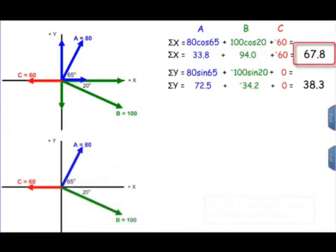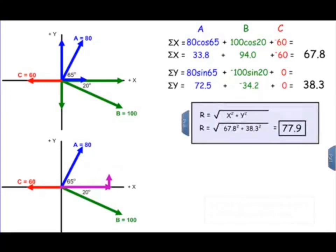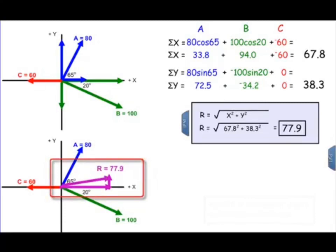The sum of the x components, 67.8, is represented by the vector on the x axis, and the sum of the y components, 38.3, is represented by the purple vector. These are the two legs of a right triangle, so we can define the resultant using the Pythagorean theorem: the square root of the sum of the x's squared plus the sum of the y's squared gives us a magnitude of 77.9 for the resultant.